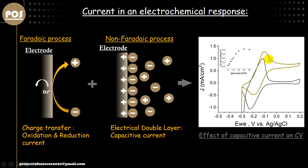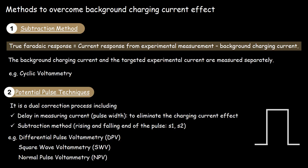Here we have given one example — there are two curves that look like a faradaic component, but actually these curves are a combination of faradaic and non-faradaic. By looking at these curves qualitatively you will not be able to say how much current is being contributed by the faradaic part. The true faradaic response is the current response obtained by the experiment minus the background charging current, so subtracting the charging current gives us the faradaic response mostly.